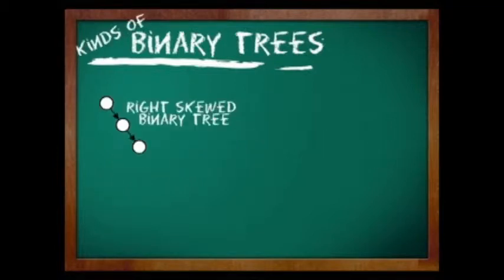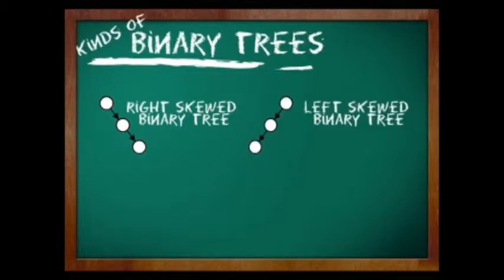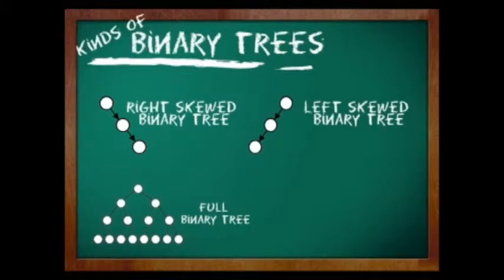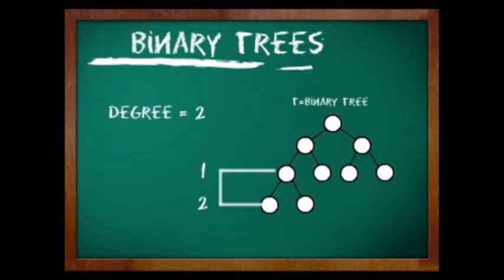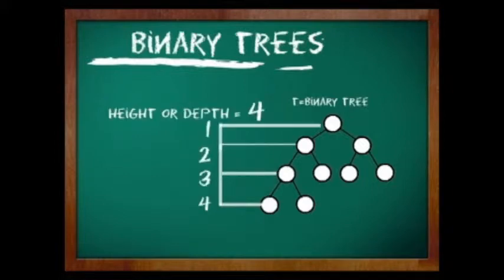Binary trees have different types: the left-skewed binary tree, the right-skewed binary tree, the full binary tree, and a complete binary tree. The number of non-null subtrees of a node is called the degree. If a node has a degree of zero, it is classified as a leaf or terminal node. The height or depth of a tree is the level of the bottom-most nodes, which is also the length of the longest path from the root to any leaf.